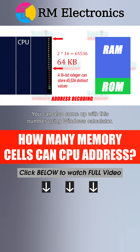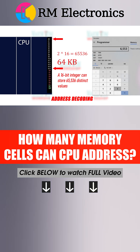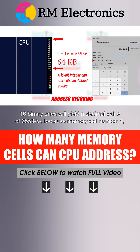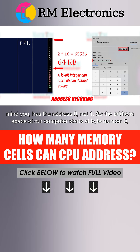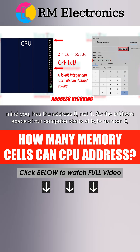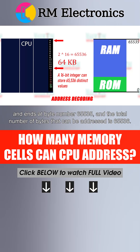You can also come up with this number using Windows Calculator. 16 binary ones will yield a decimal value of 65,535, because memory cell number 1 — mind you — has the address 0, not 1. So the address space of our computer starts at byte number 0 and ends at byte number 65,535.